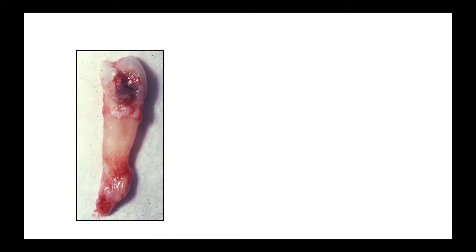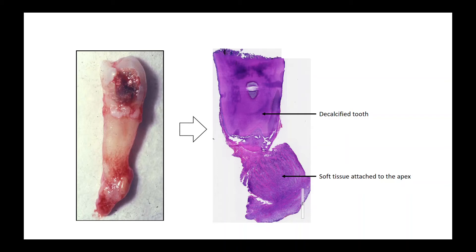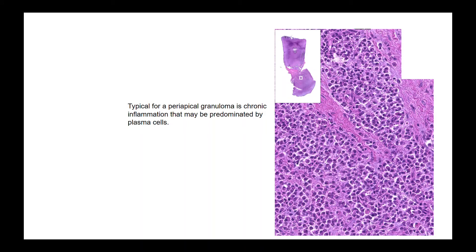This slide shows an extracted premolar with a deep carious lesion and some soft tissue attached to the root apex. The extracted tooth is fixed in formalin, split, and decalcified. After sectioning and staining with hematoxylin and eosin, we can see the decalcified tooth with dentin and cementum and the cell-rich soft tissue attached to the apex. Closer up, the irregular border of the apex confirms tooth resorption and the cell-rich connective tissue full of inflammatory cells. The diagnosis is periapical granuloma.